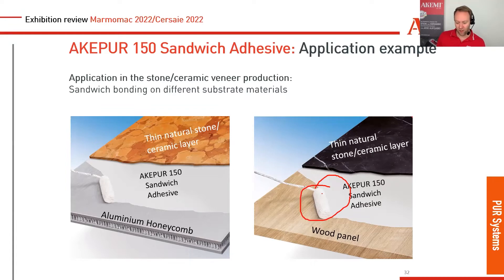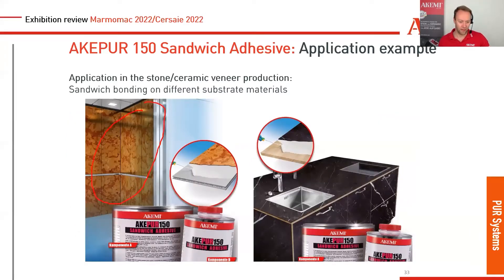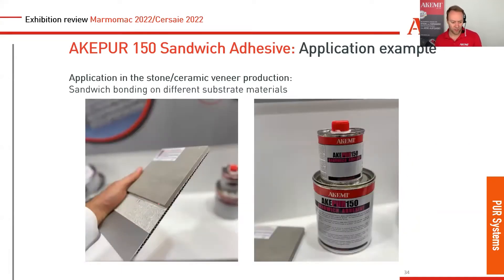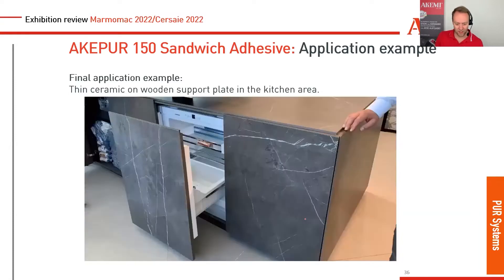You can apply it with a roller for thin, even coats, or with a notched spatula for thicker layers to compensate for unevenness and bond the material on top. Applications include elevators, kitchen cabinet fronts, and anywhere you're bonding thin ceramic to aluminum honeycomb, MDF panels, or other lightweight substructure materials.